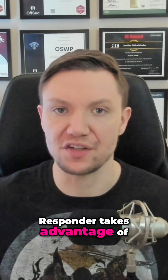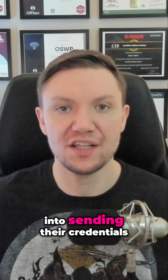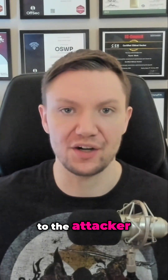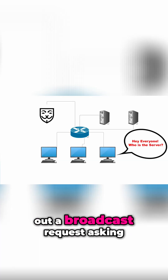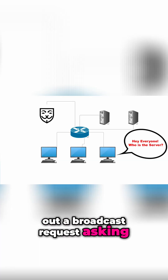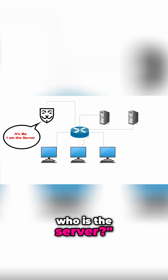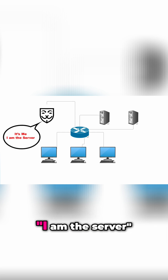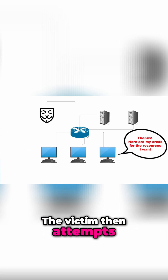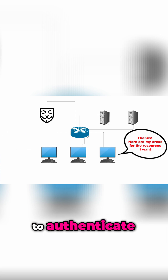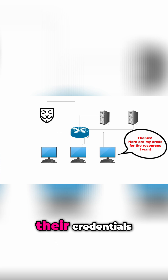Responder takes advantage of this by tricking devices into sending their credentials to the attacker. When a device sends out a broadcast request asking, 'Hey, who is the server?' Responder replies, 'I am the server.' The victim then attempts to authenticate, allowing Responder to capture their credentials.